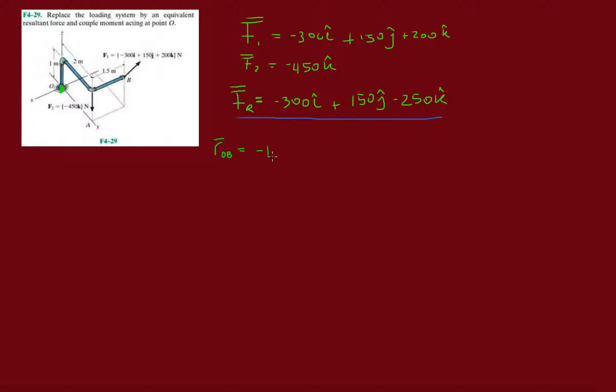I need the distance from O to B because that's where F1 is acting. So it's going to be minus 1.5i, then 2 meters in the j direction, positive j. Then I hop up one meter in order to get to B, so plus 1k.